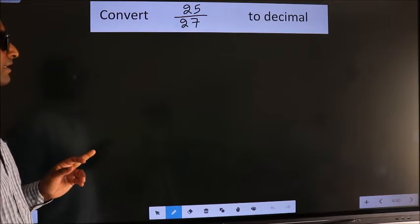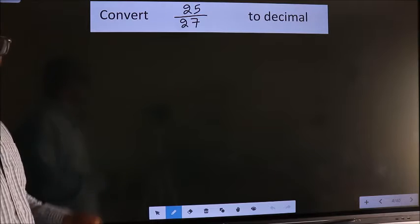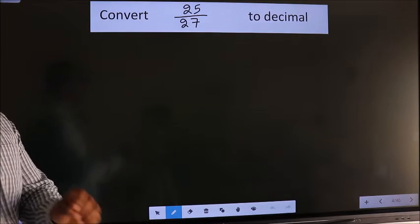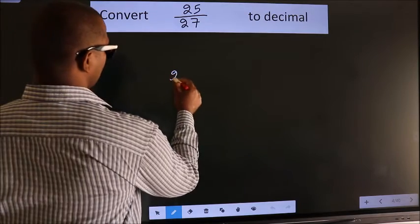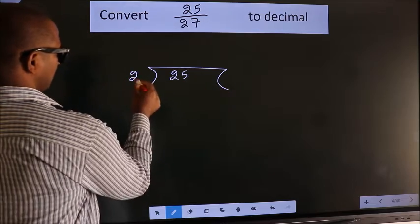Convert 25/27 to decimal. To convert this to decimal, we have to divide, and to divide we should frame it in this way: 25 here, 27 here.